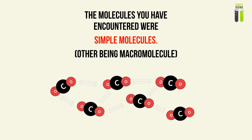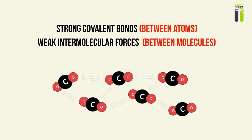The molecules you'll encounter in the next couple of videos on molecular structure are basically simple molecules. Simple molecules are molecules that have strong covalent bonds — that's almost every covalent bond molecule. The covalent bonds are generally very strong and they act between atoms within a molecule. For example, in a carbon dioxide molecule, covalent bonds exist between the carbon and the oxygen atoms on either side.